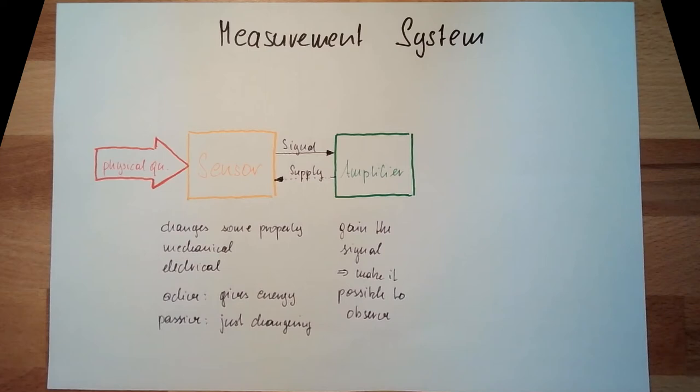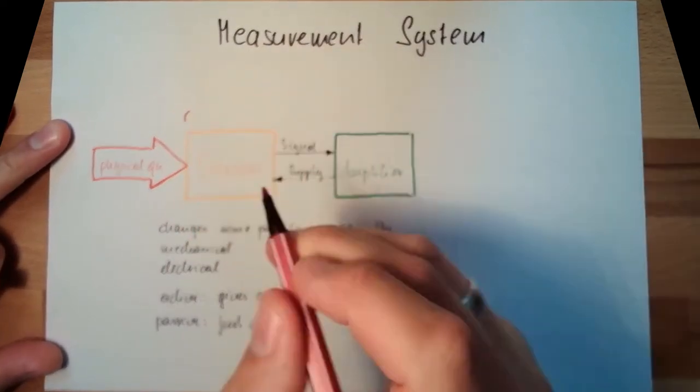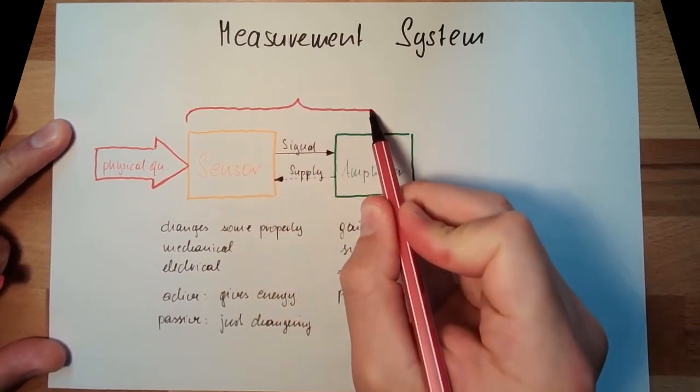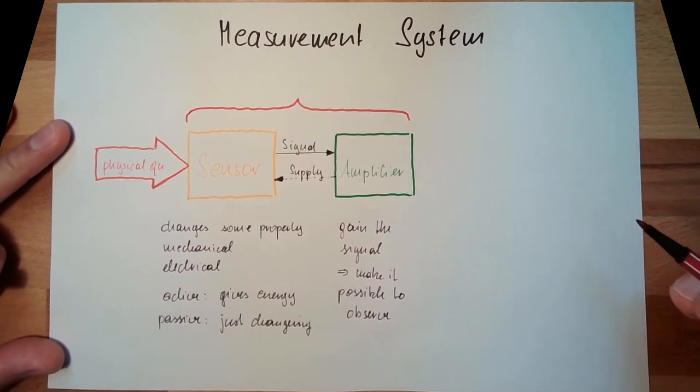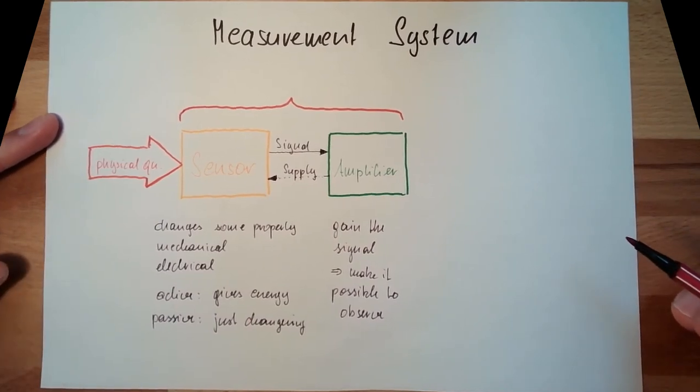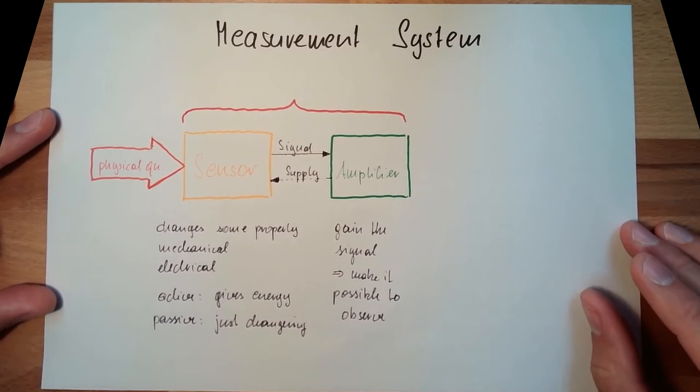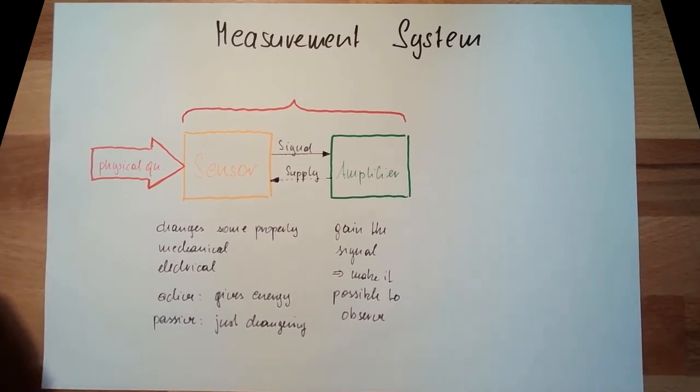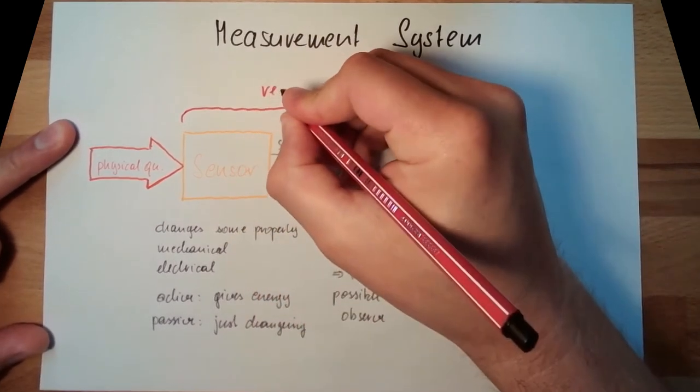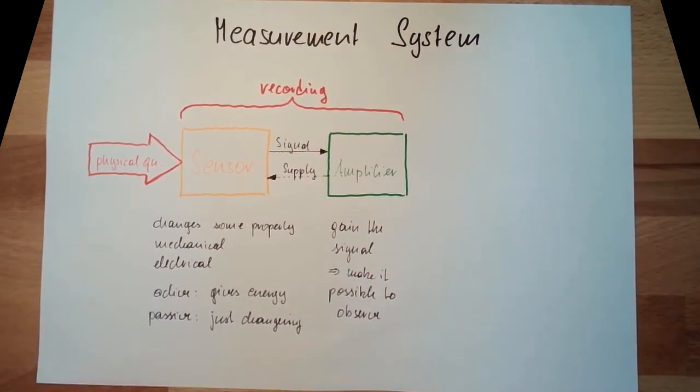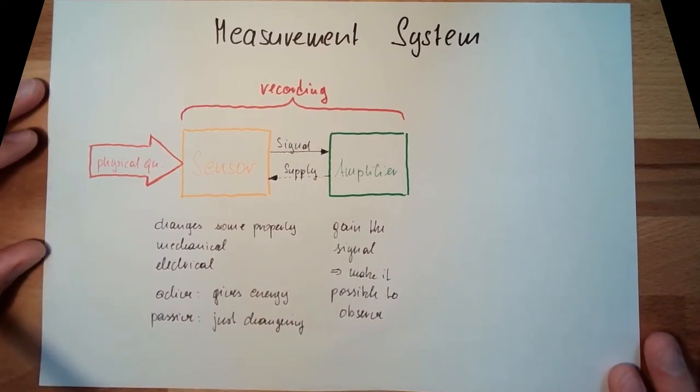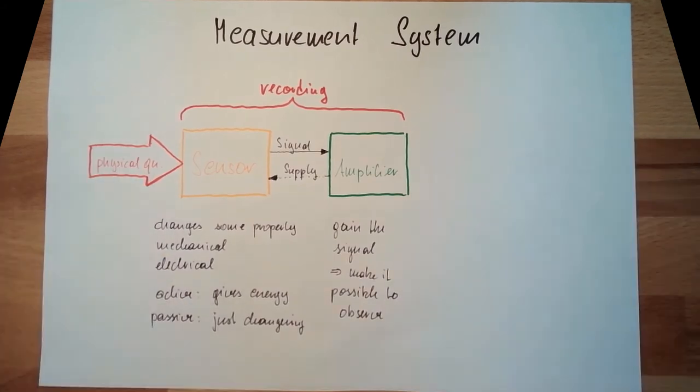That's the thing of an amplifier. This part here with the amplifier and the sensor is called Meswert Aufnahme, measurement recording. That's the recording part. Recording, observing, measuring, that's the recording part.